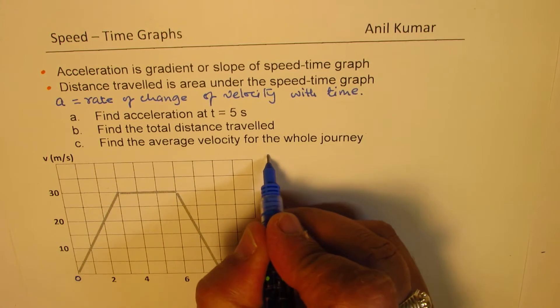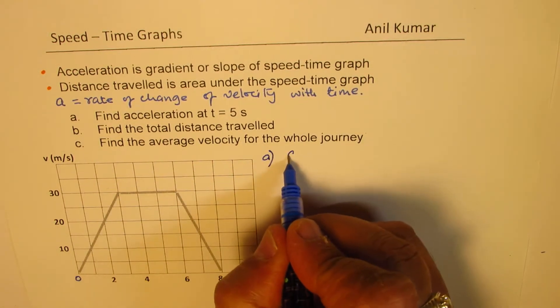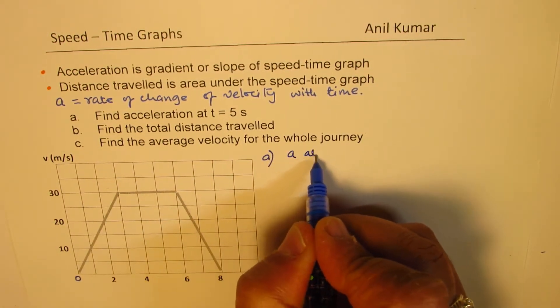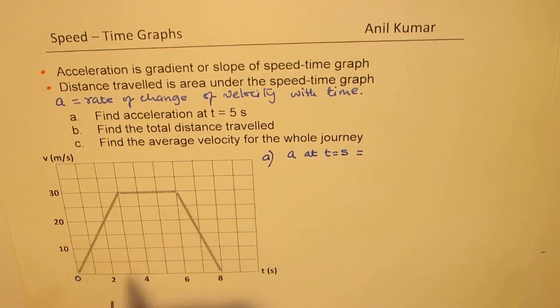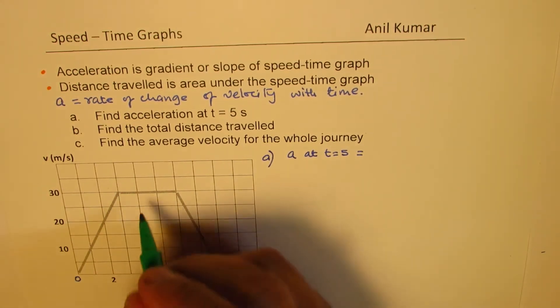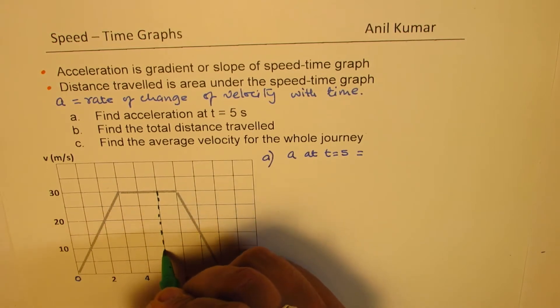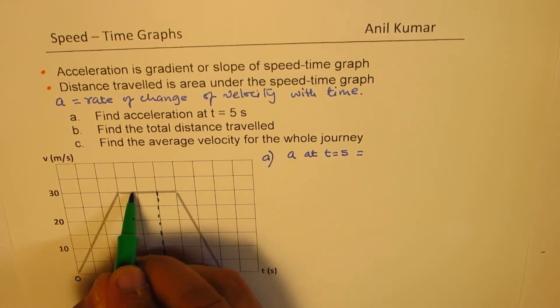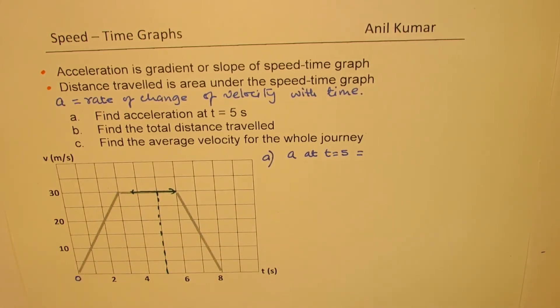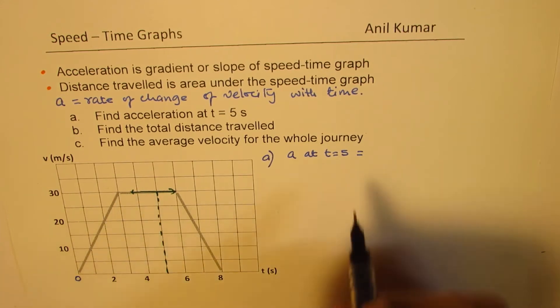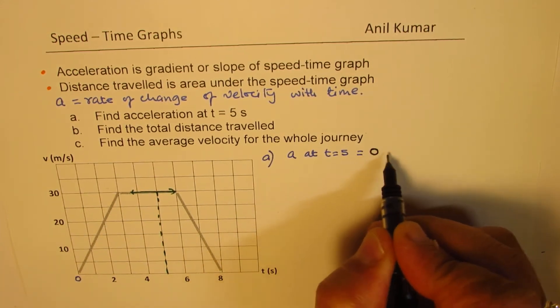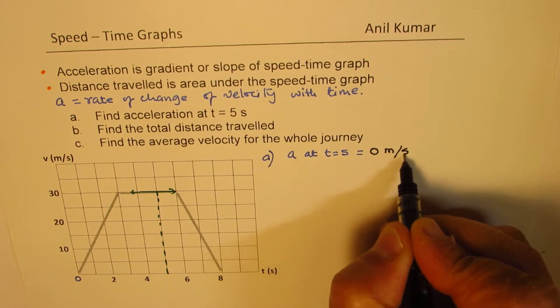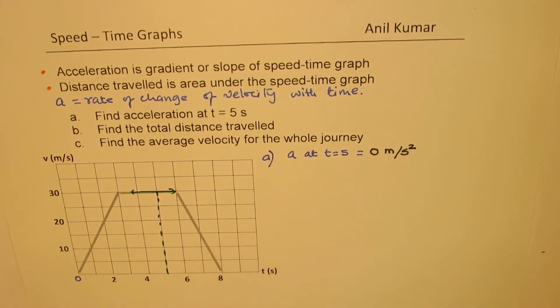As far as the acceleration is concerned, part a, we know acceleration a at t equals to 5 is equal to. So here, at 5, what is the slope? At 5, we see that the curve is horizontal. So the slope here is horizontal. So horizontal means 0. So there is no rate of change of velocity here. So it is equal to 0. Units would be meters per second squared. So that becomes the answer.